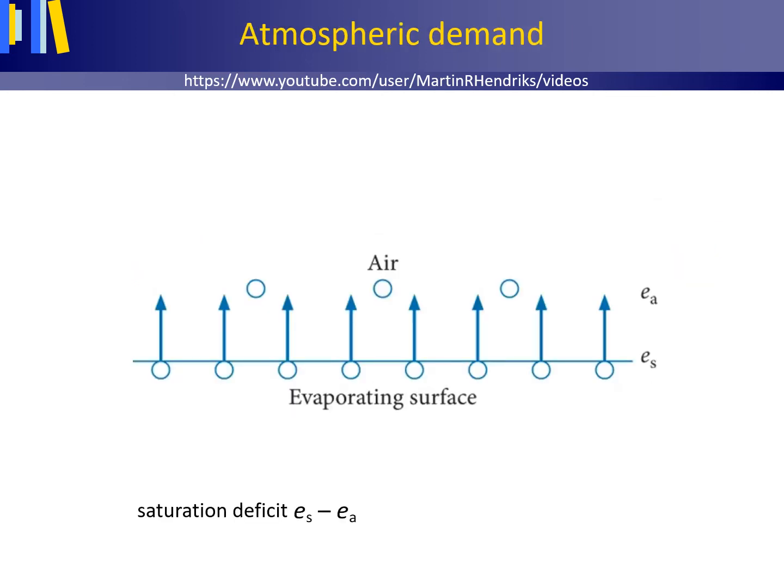Besides the net radiation Rn as a source of energy, the atmospheric demand for water vapor also plays an important role in evaporation. This is shown by ES minus EA in the Penman-Monteith equation.